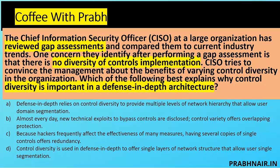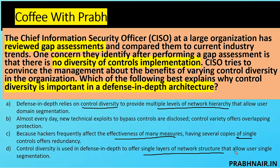Option A: defense in depth relies on control diversity to provide multiple levels of network hierarchy allowing domain segmentation — true, because segmentation limits the attack surface. Option B: almost every day new technical exploits are disclosed; control variety offers overlapping protection — also true. Option C: having several copies of a single identical control offers redundancy — but two identical firewalls or two identical DLPs doesn't add much; you need diverse controls and strong people to manage them. Option D: control diversity offers a single layer — not true, we need multiple layers.